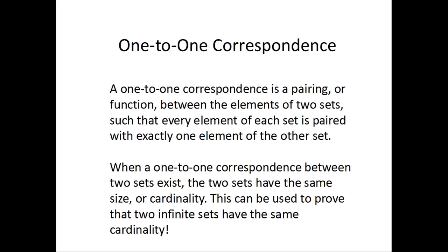In general, a one-to-one correspondence is a pairing between the elements of two sets so that each element in one set is paired with exactly one element in the other set. This seems like a simple idea, but it's actually a very powerful tool that can be used to prove that two sets have the same number of elements, even when the sets are infinitely large.